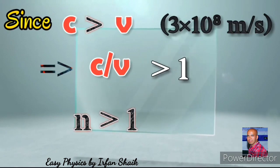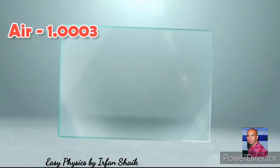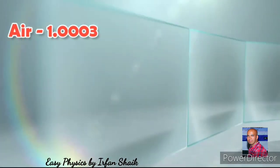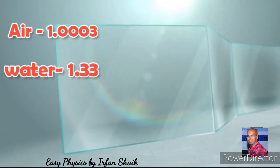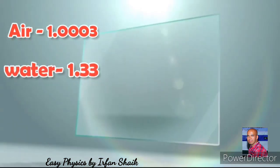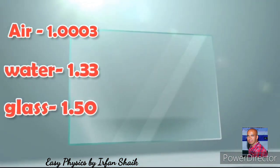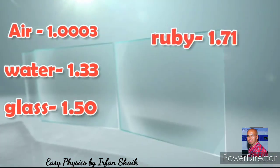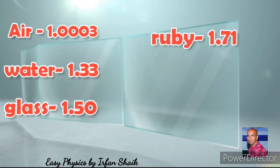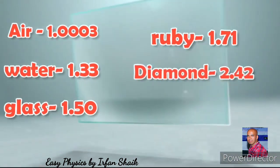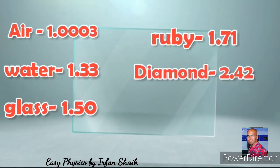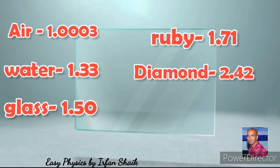Let us know the values of refractive index of a few materials: air 1.0003, water 1.33, glass 1.50, ruby 1.71, and diamond 2.42.